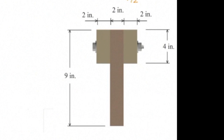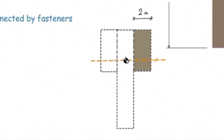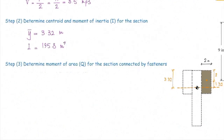Let's consider the right part. Q equals area times distance, where area is the area of that subsection and d is the distance from its centroid to the centroid of the entire section. The centroid of the full section is 3.32 inches below the top surface. The height of the subsection is 4 inches, so its centroid is 2 inches from the top. The distance between the two centroids is 1.32 inches. Therefore, Q = 2 × 4 × 1.32 = 10.56 in³.